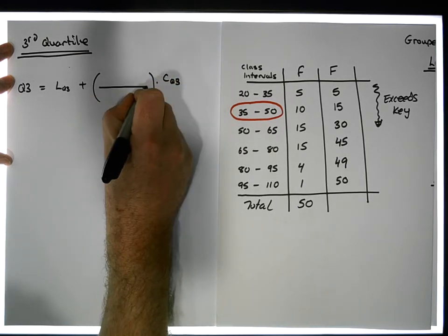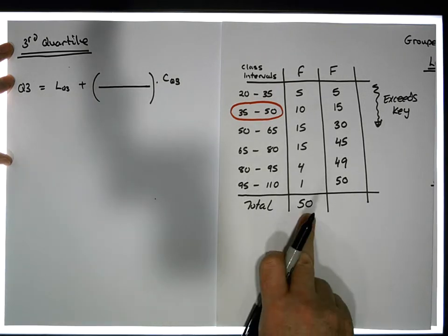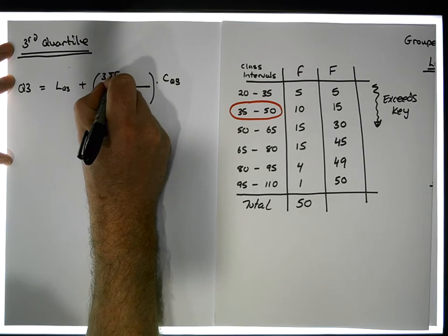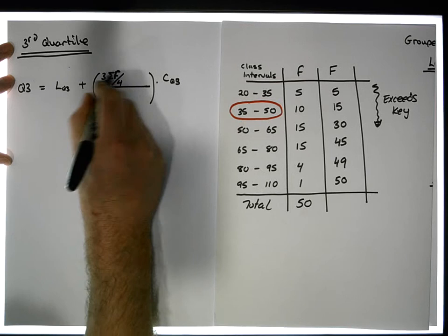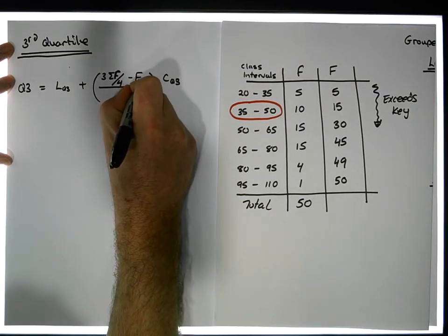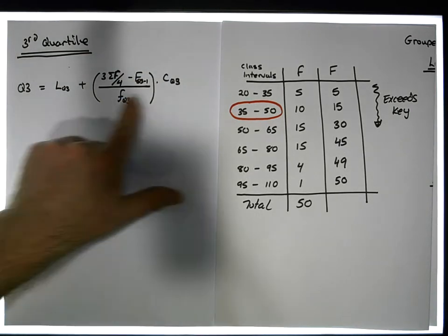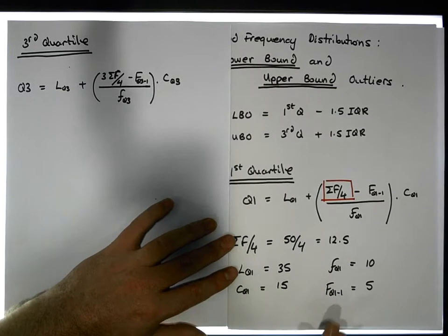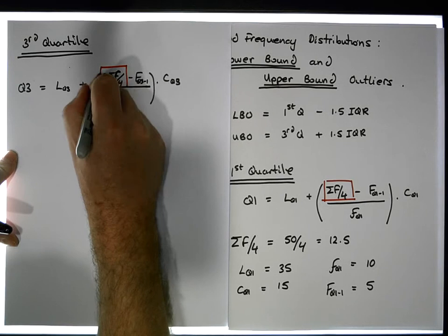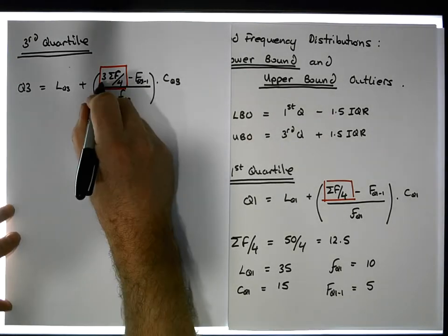So we require all of these values. Like what we did previously, the key to calculate the third quartile is this particular value: three sigma f over four. We need to calculate what three sigma f over four is.